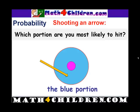You are most likely to hit the blue portion. Why? Because it's larger. So probability is about the likelihood of something happening.